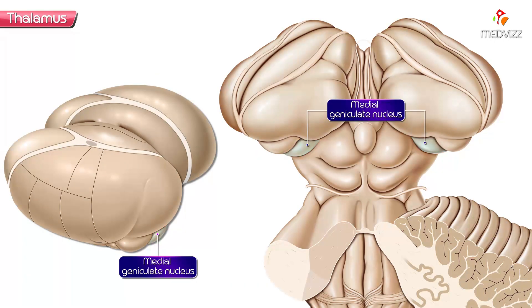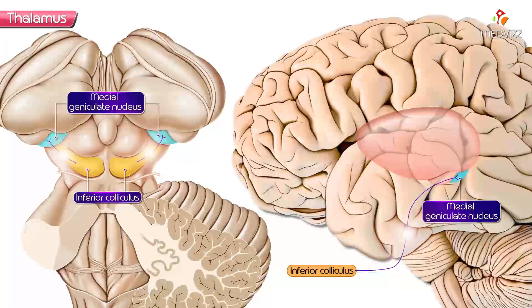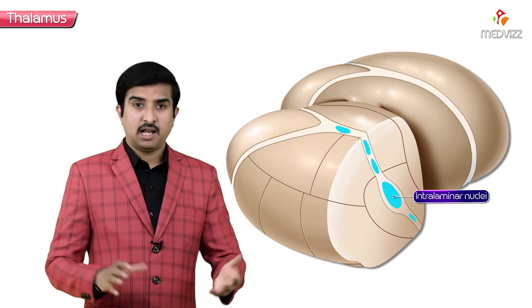The medial geniculate nucleus is the major relay center for auditory information. It receives information mainly from the inferior colliculus and projects into the primary auditory cortex — Brodmann areas 41 and 42.